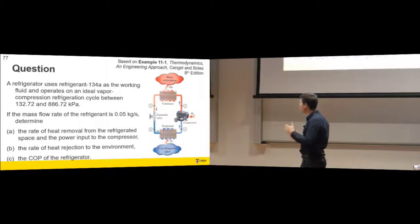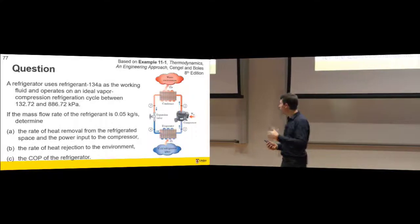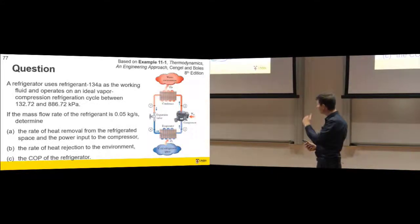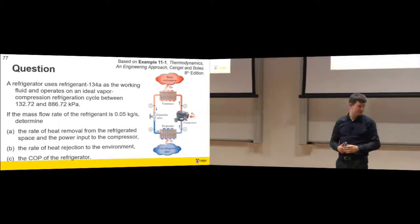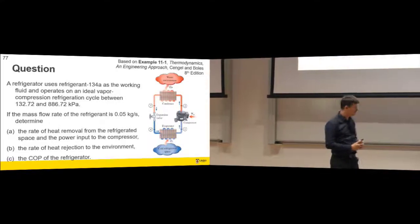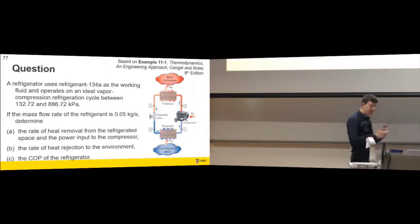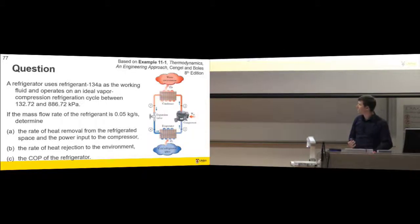If we thought we didn't have enough data before, it seems like two pressures - is that enough to define a cycle? We'll find that it is. And it's wrapped up in what we consider to be ideal, the ideal assumptions that we make.